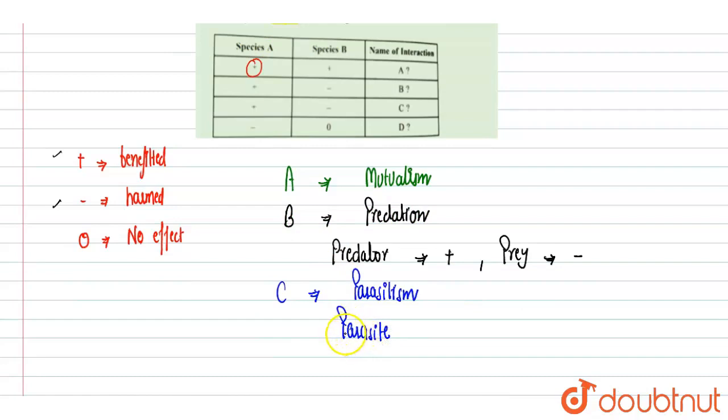Parasites are those organisms which live on other organisms and obtain their nourishment from them, so these get benefited. The organism on which the parasite lives is called a host. They are taking nutrition from the host, so in this way the host is getting harmed. So the minus sign is for the host, or species B.